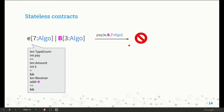Instead, what happens if I try to append a transaction where I'm transferring seven Algos? This time the script evaluates to false because it violates the amount condition. And what happens if I try to append a transaction where the receiver is C? Also in this case, the transaction cannot be appended because this clause of the script fails.